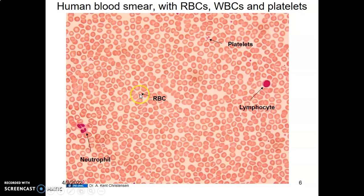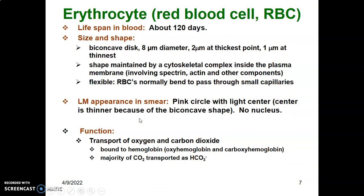Looking at the blood smear: the cell with a clear central portion is a red blood cell. Platelets look like small fragments. A lymphocyte is usually bigger than the red blood cell with a large nucleus and a thin rim of cytoplasm. A neutrophil is always a big cell with multi-lobed nuclei. Red blood cells have a lifespan of 120 days and are biconcave discs measuring eight micrometers in diameter.